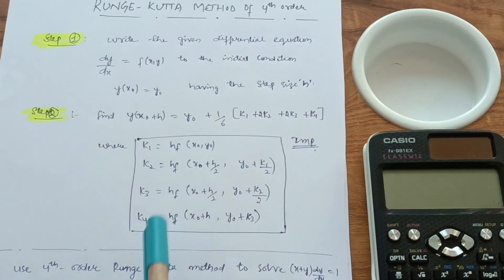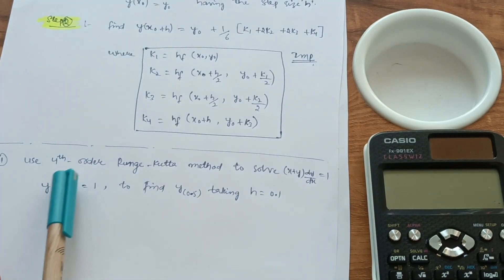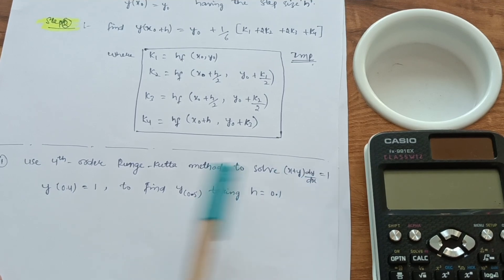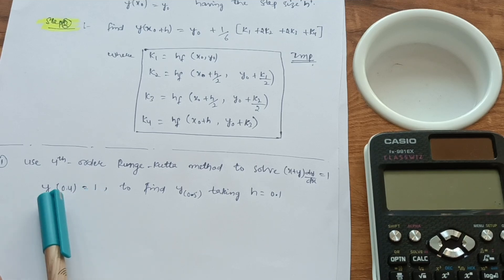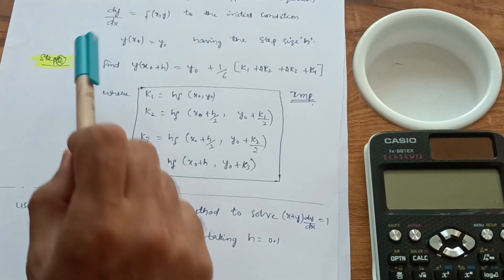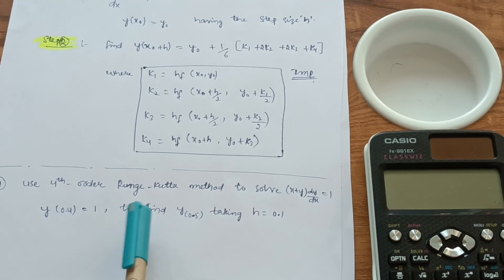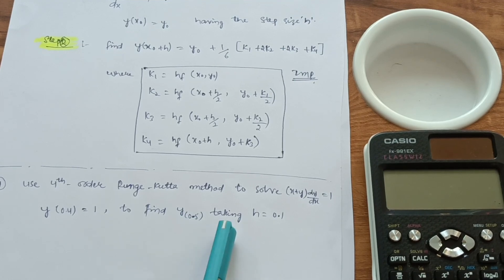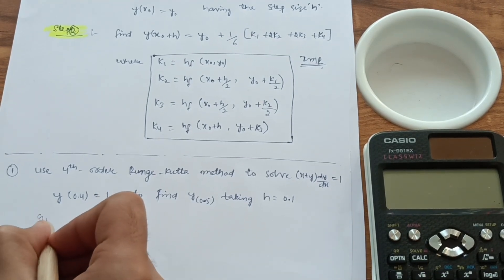This is very important to memorize so you can easily tackle the question and get 7 marks easily. The example I have taken is: use the fourth-order Runge-Kutta method to solve (x + y)·dy/dx = 1, given y(0.4) = 1, find y(0.5) taking step size h = 0.1. Let's solve it without wasting time.